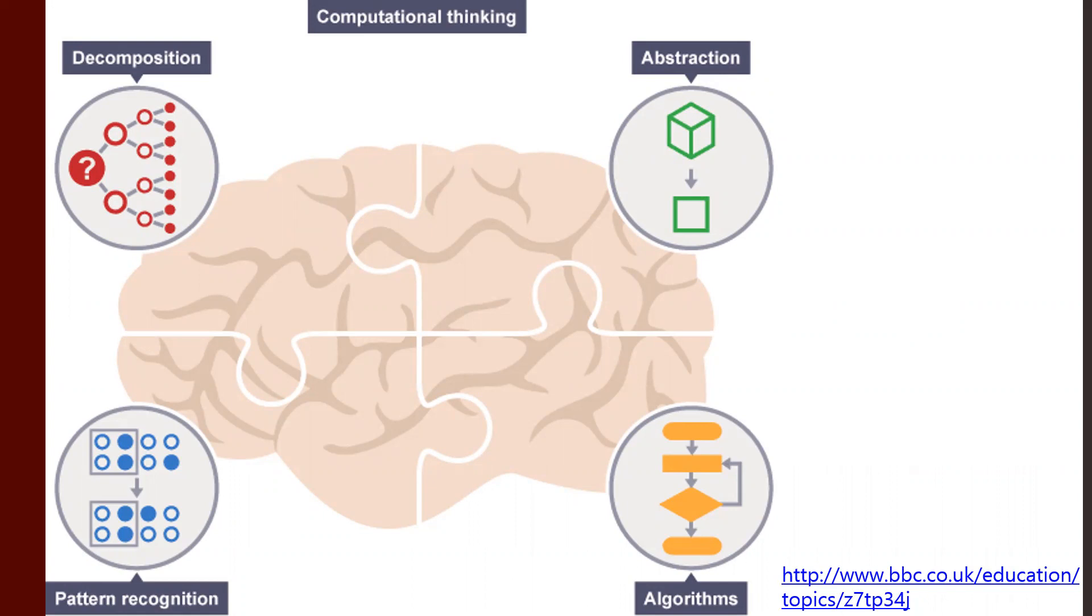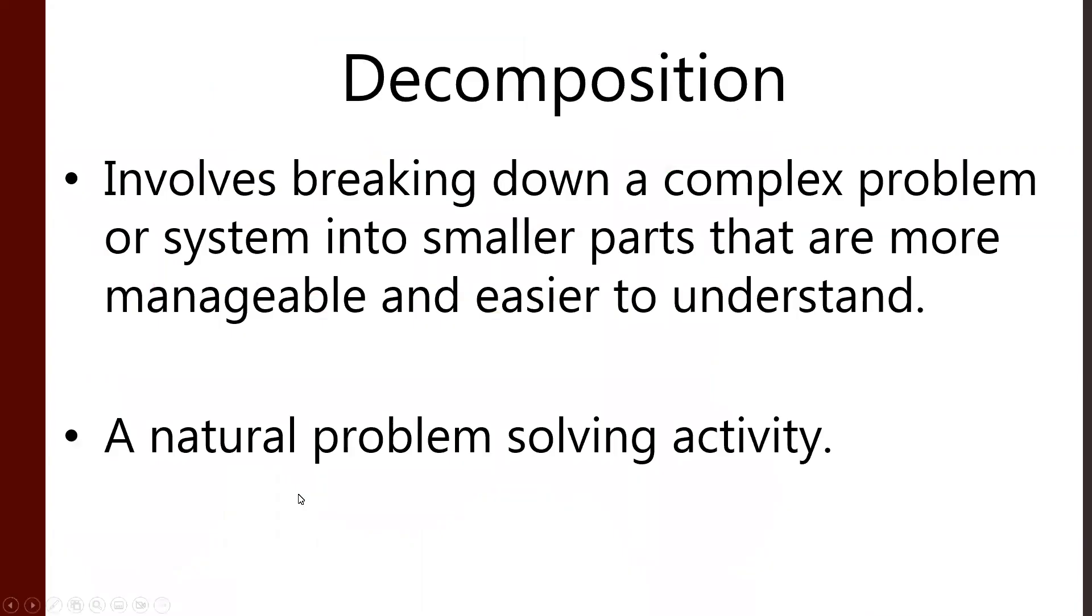Some of their breakdown on what computational thinking means. Four aspects. These are broadly agreed upon in the computer science education literature: decomposition, abstraction, pattern recognition, and algorithms. We're going to run through these and see what's up, and we're going to be thinking about them in connection to GIS.